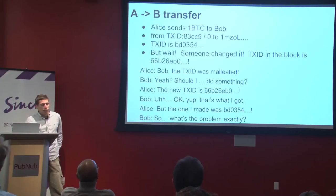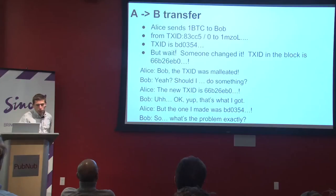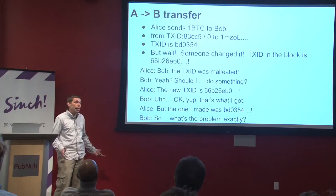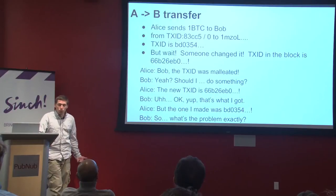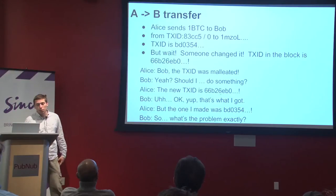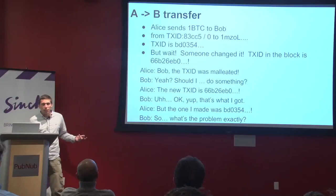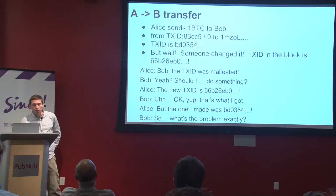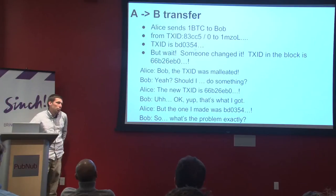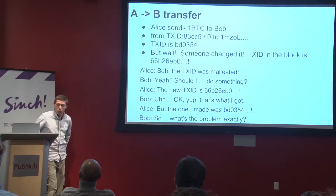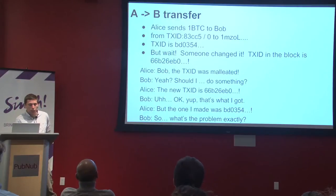First: an A-to-B transfer. Alice sends a bitcoin to Bob. She sends from TX ID A3 to address 1ZMOL; her TX ID is PDO354. But then someone changed it — the TX ID that gets into the block is 66B2EB0. Alice is panicking and calls Bob, who says 'yeah that's what I saw.' But Bob got his bitcoins — Alice's transaction went through. This is really not a problem. Bob sees the new TX ID, probably never saw the old one, and can spend his bitcoin. The TX ID changed, but who cares — just sign the new one if you want to spend.